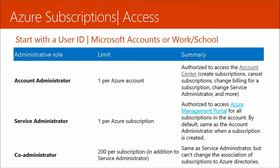Some departments and sub-business units want to keep these things separate. So whether I have one or multiple subscriptions, we need to control access to them. There are different types of administrative roles — it's not really complex, but you do need to understand the subtle differences. There are primarily three different accounts, but before we talk about those roles, you need to understand that there are two different types of IDs we can use: user IDs, which can be Microsoft accounts, or work or school accounts.